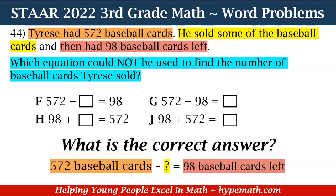Let's start with F: 572 minus a square equals 98. That one does seem correct because it matches what we set up — 572 baseball cards minus an unknown equals 98 baseball cards left. So F can be used, which means it's not our correct answer. Remember, we're looking for the equation that could NOT be used — 'not' is in all caps.